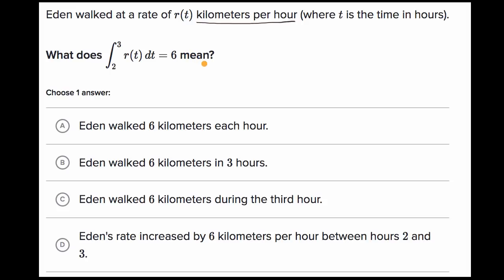Let's see which of these choices match that. Eden walked six kilometers each hour. It does tell us that from time two to three, Eden walked six kilometers, but we don't know what happened from time zero to time one, or from time one to time two. So I would rule this out.